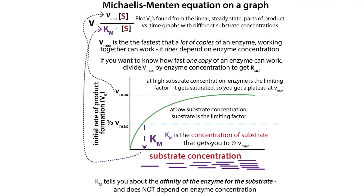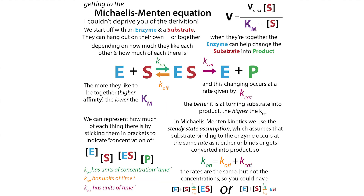In the Michaelis-Menten graph, the x-axis is your substrate concentration. Note that Km comes from this graph and does not depend on the substrate concentration — it's the substrate concentration at which you have half-maximal velocity. Because how much individual enzymes like to bind substrate doesn't depend on how much substrate is around. Similarly, Kcat doesn't depend on substrate concentration. The only thing that depends on substrate concentration is the velocity, and that's why you measure velocity at a bunch of different substrate concentrations to find your Michaelis-Menten constants.